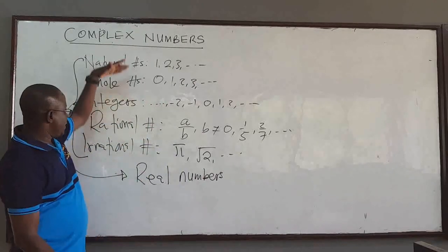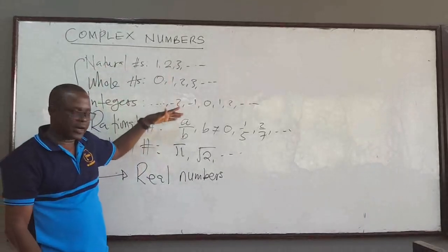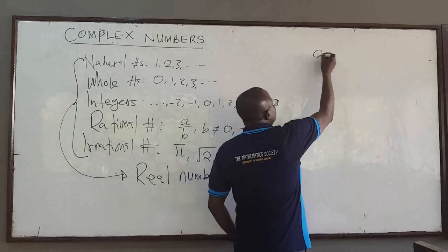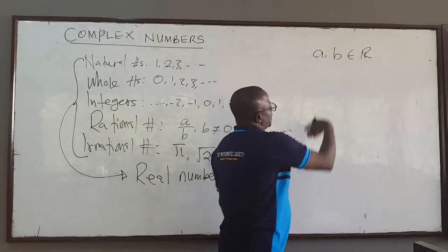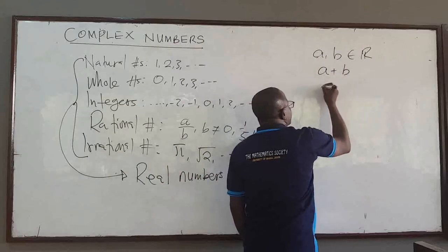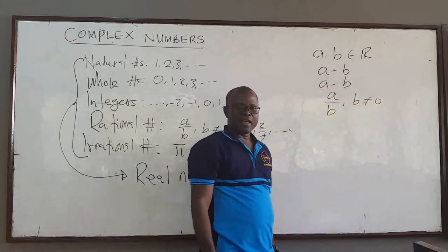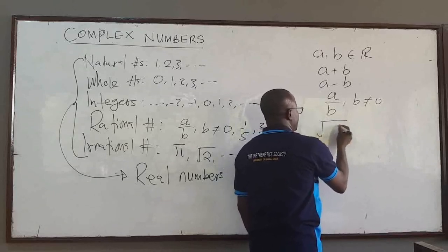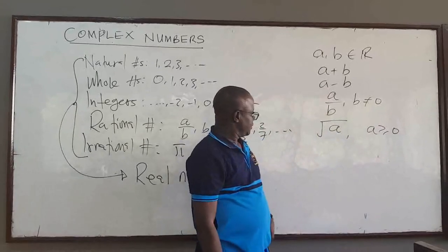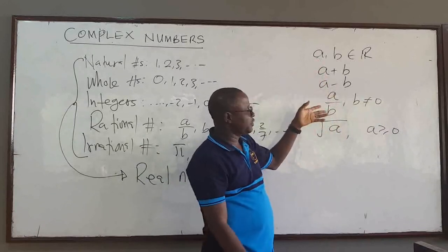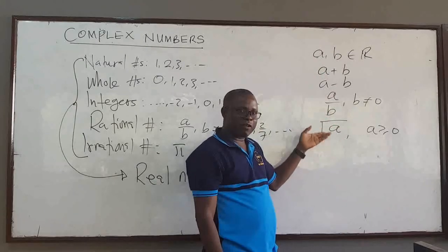Once we know the real numbers, we can perform operations on them. For instance, if A and B are members of the real numbers, you can add them, subtract them, multiply them, divide them — provided B is not equal to zero — and more interestingly, you can find the square root of a positive real number. These are all operations you can perform under the real number system.